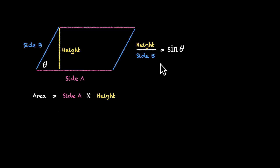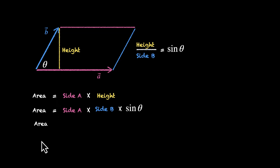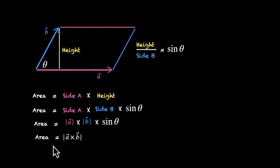So let's replace height with theta and side B. Area equals side A times side B times sine theta. With two magnitudes and sine theta, you can see that a cross product is happening here. Now if you think of these two sides as vectors — A vector and B vector — area is equal to the magnitude of A times the magnitude of B times sine of theta. And this is the magnitude of the cross product. The cross product is |A| × |B| × sin θ × n̂, where n̂ is a unit vector showing the direction. So area is actually the magnitude of A cross B.